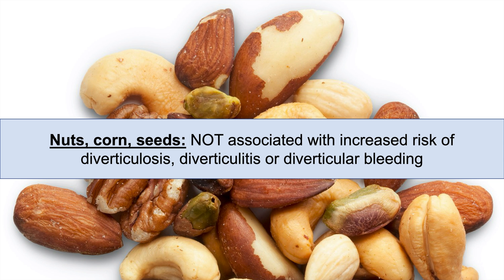You might have heard that eating nuts, corn, and seeds can worsen diverticular disease, but there's not very significant evidence to show that. Nuts, corn, and seeds do not appear to be associated with an increased risk of diverticulosis, diverticulitis, or diverticular bleeding.